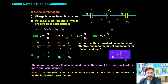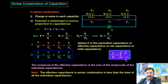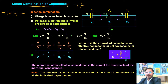The next topic is the series combination of capacitors. This is similar to the combination of resistors studied in 10th standard. Suppose there are three capacitors with capacitances C1, C2, and C3. These two vertical parallel lines with a gap represent the symbol of a parallel plate capacitor.